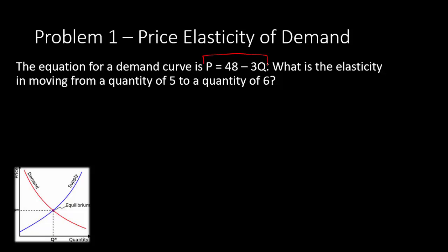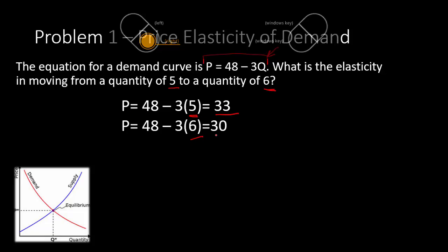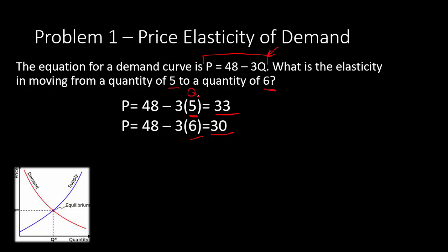In order to solve this problem, we first have to use this equation and plug in our quantities — 5 and 6 — into the equation for q and solve for p, which is price. To find the elasticity we need not only the quantities but the matching prices. Plugging in 5 gives a price of 33; plugging in 6 gives a price of 30.